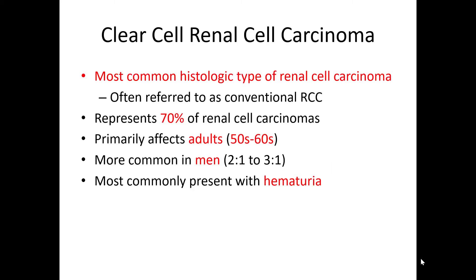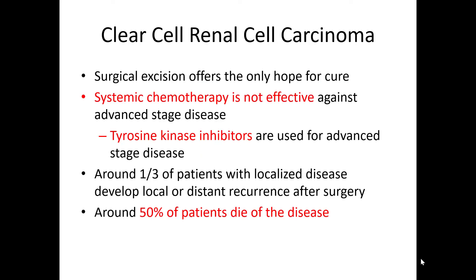Clear cell renal cell carcinoma is the most common histologic subtype, representing approximately 70% of renal cell carcinomas. It typically presents in adults, more commonly in males, with the most common clinical presentation being hematuria. These tumors are notably resistant to systemic chemotherapy; tyrosine kinase inhibitors may help, but approximately one-third of patients develop recurrence or metastatic disease, and around 50% die of the disease.